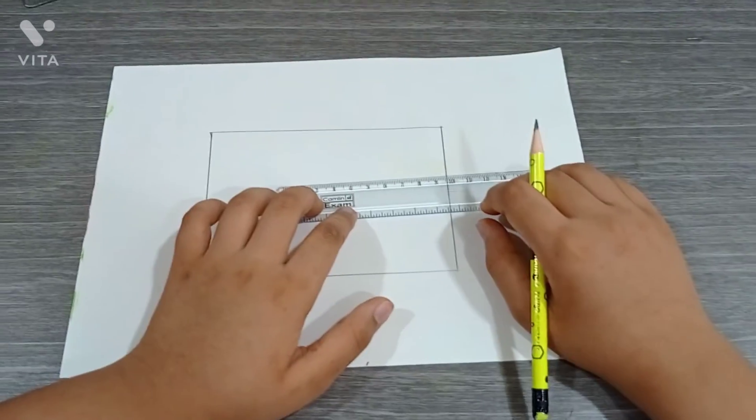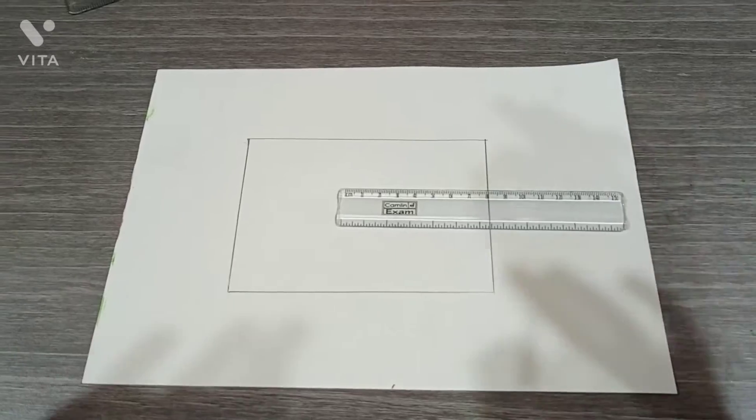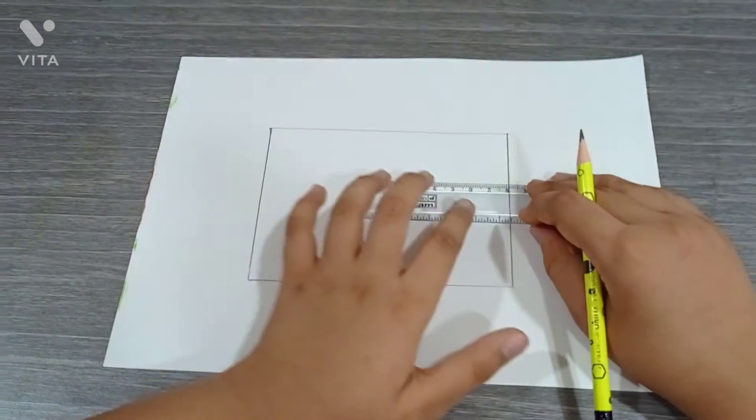So our box is ready. Now we have to draw from here to here one line, and in this way here.